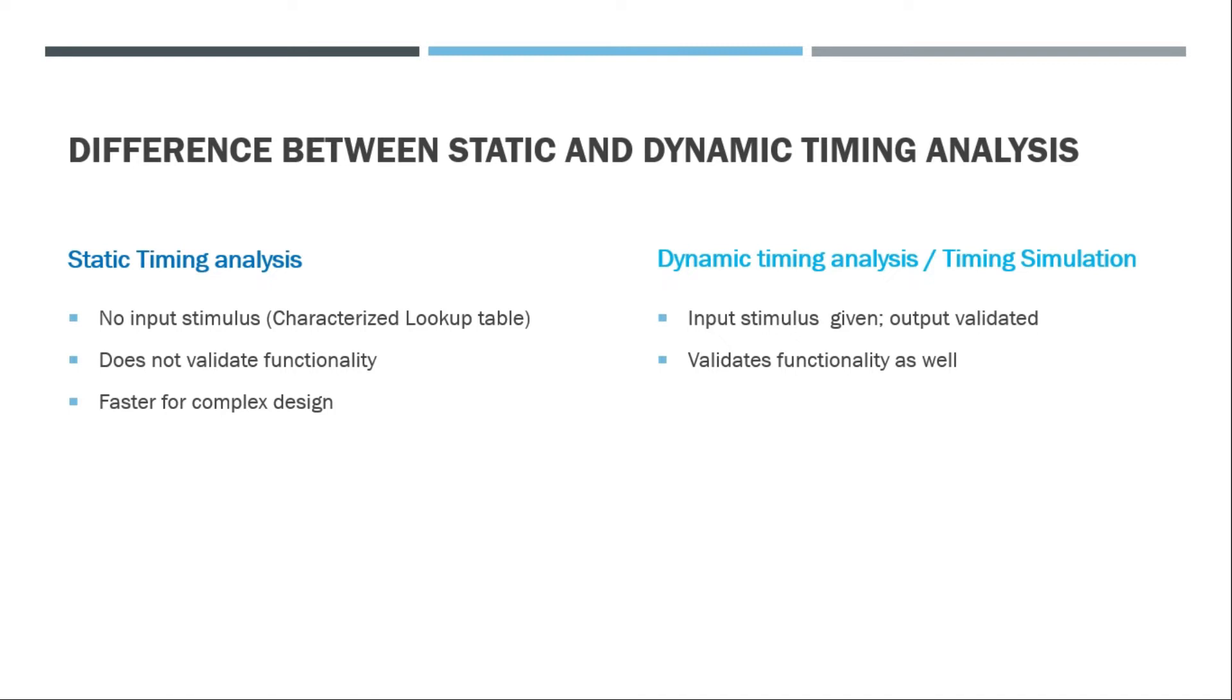If we have 10 million gates, we have to validate all of them by giving input stimulus. Let's say the inputs are hundred or thousand. Now we need 2 to the power thousand combinations of inputs which need to be given to cover them fully. But here it's not the case because we don't provide any inputs, it's just the calculation that has to happen.